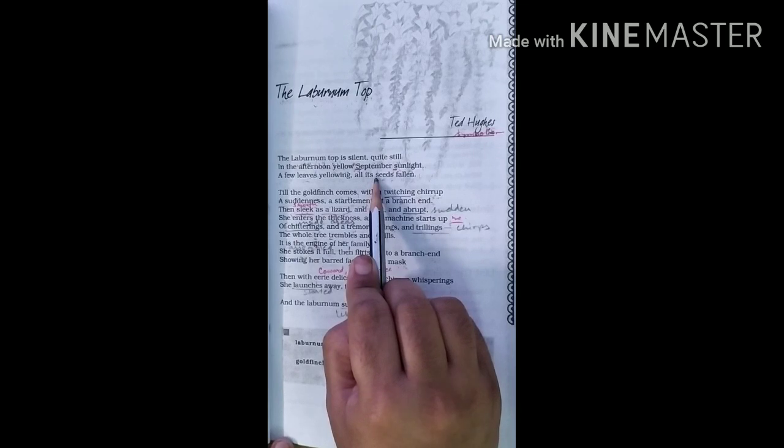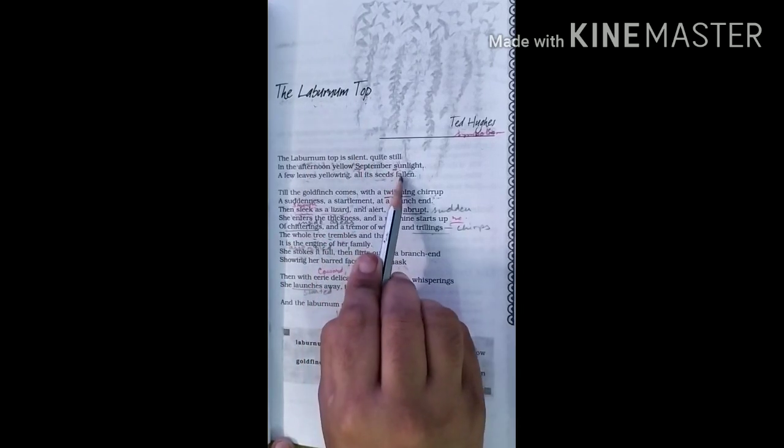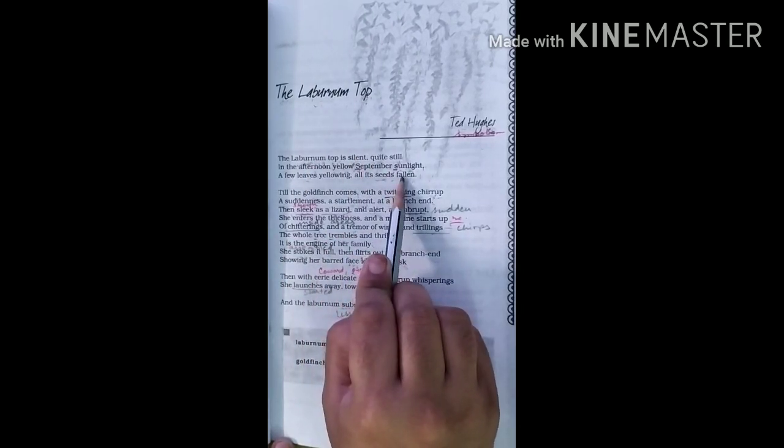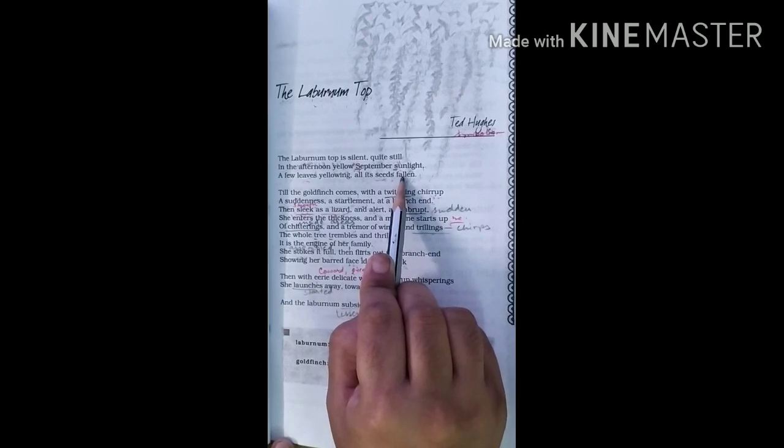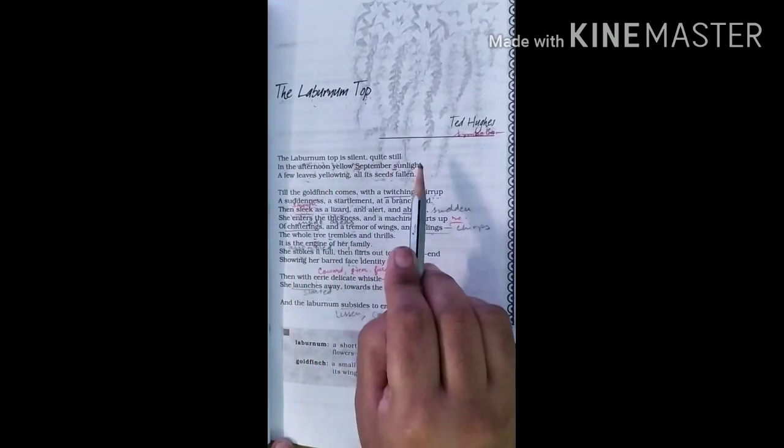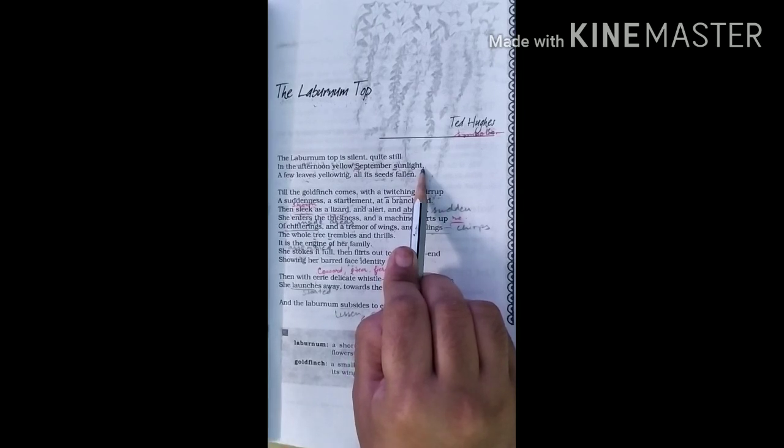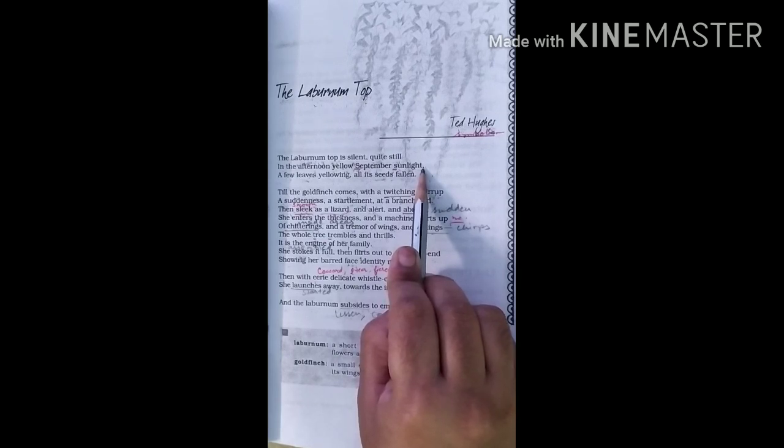As it is the time of autumn, the leaves of the tree have turned yellow and its seeds have fallen off. How we can know that autumn season is there? Because the seeds of the Laburnum tree have already fallen. In this stanza, the poet uses the image yellow color repeatedly. First, the tree's flowers are yellow, then its leaves, flowers are yellow, then leaves have also turned yellow, and the sunlight is also yellow. The yellow color symbolizes beauty.